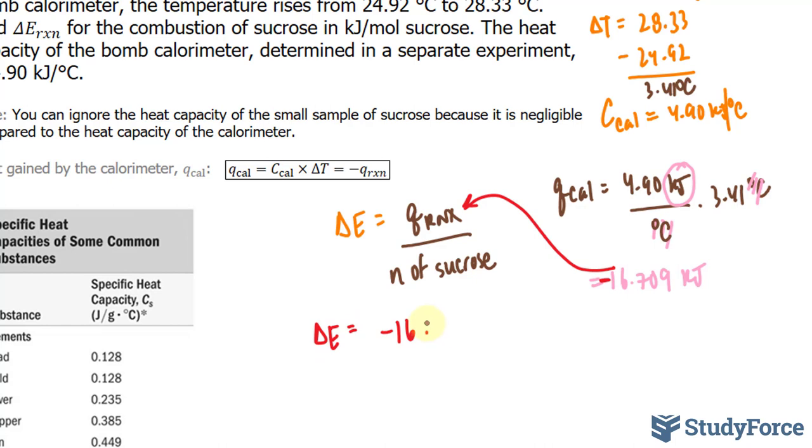We have negative 16.709 kilojoules. And now we have to find the number of moles of sucrose. To do that, we need its molar mass. The molar mass of sucrose, you can do this by yourself using a periodic table, is equal to, and I'll represent it as capital M, of 342.30 grams per mole.